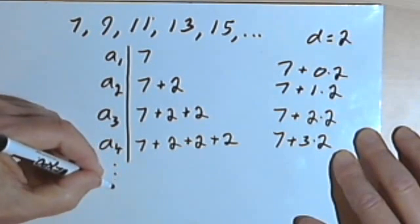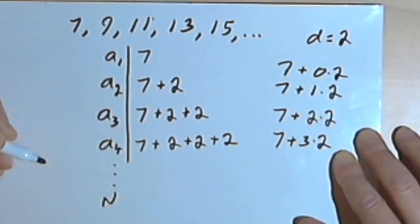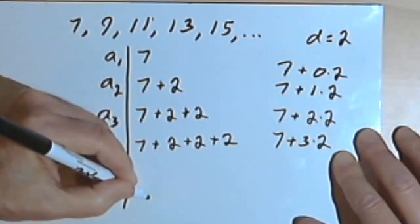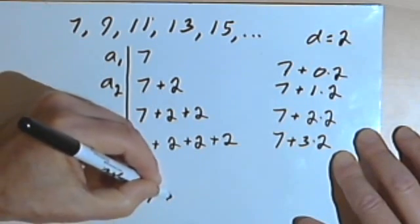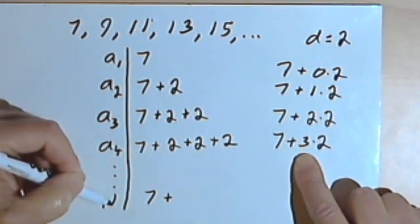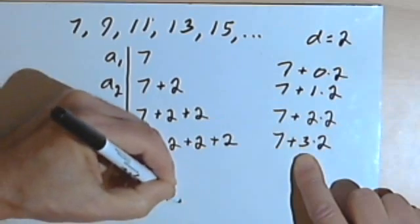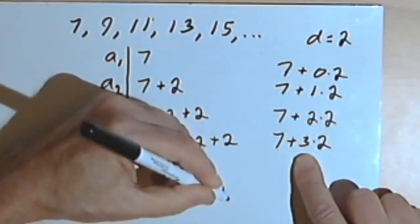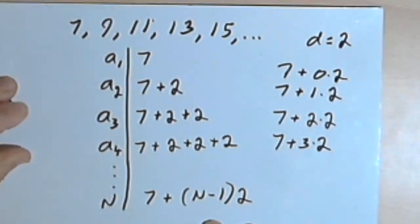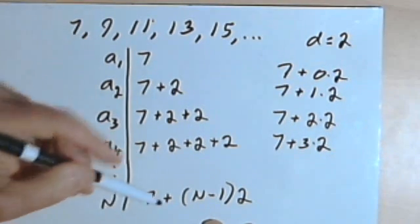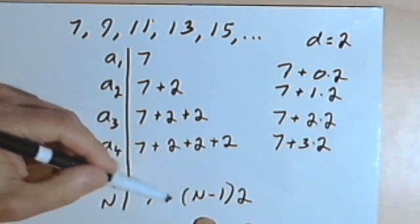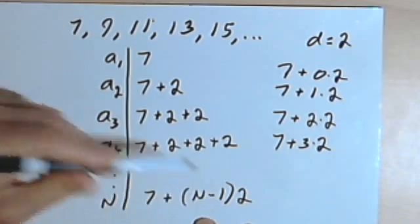So if I wanted to find some term which we'll call term n, or the nth term, I would keep the same pattern going. I would say that must be 7 plus the number less than the number of the term that I have. So the number less than n would be n-1. I'm gonna multiply that times 2. So a rule for this sequence would be that the nth term, or whatever term I want to use for n, whatever number, would be 7 plus n-1 times 2.